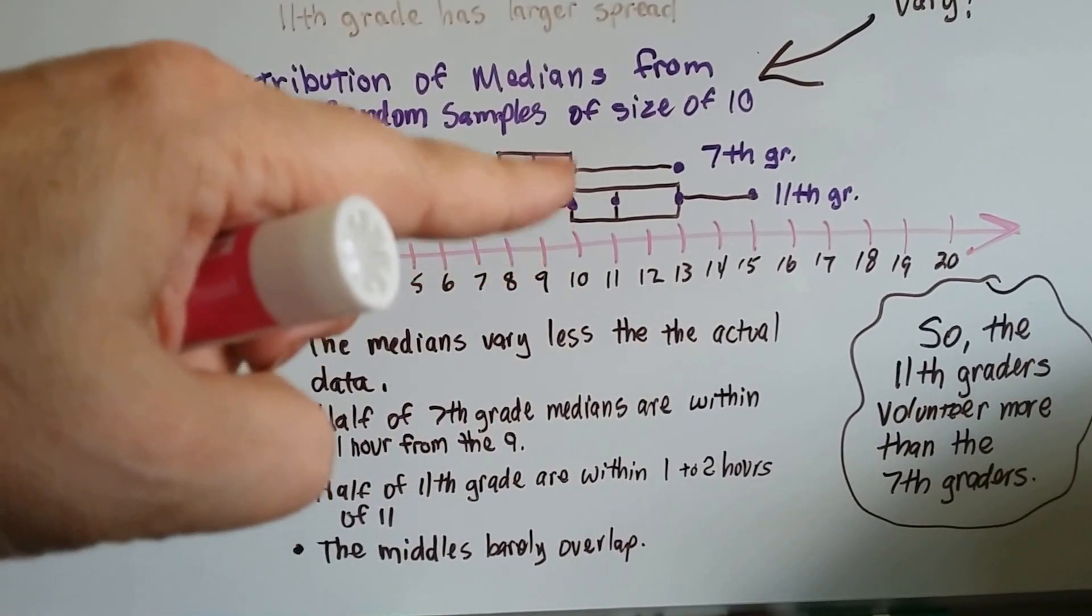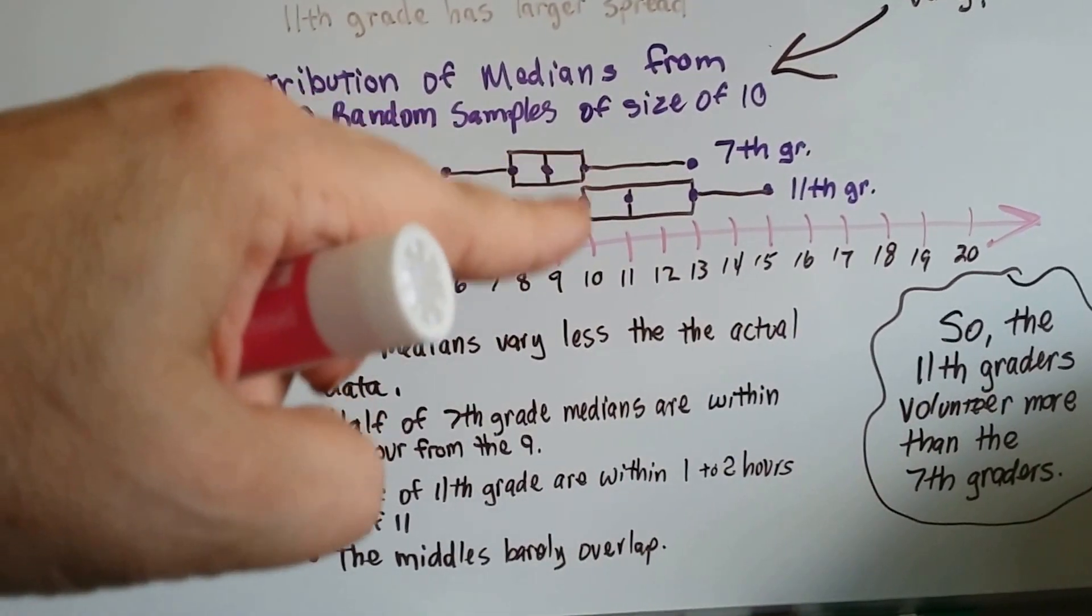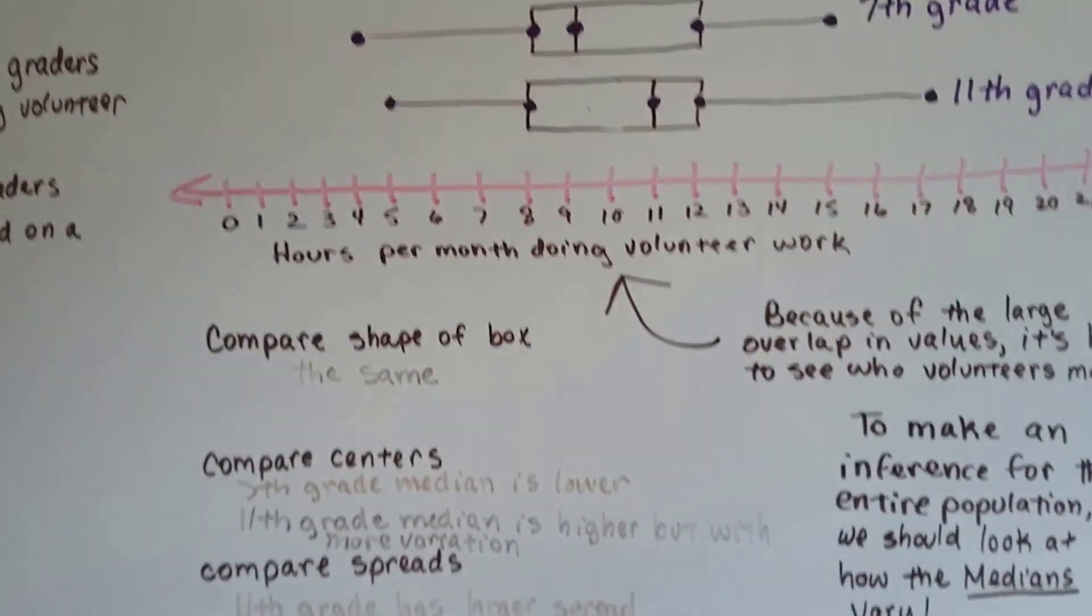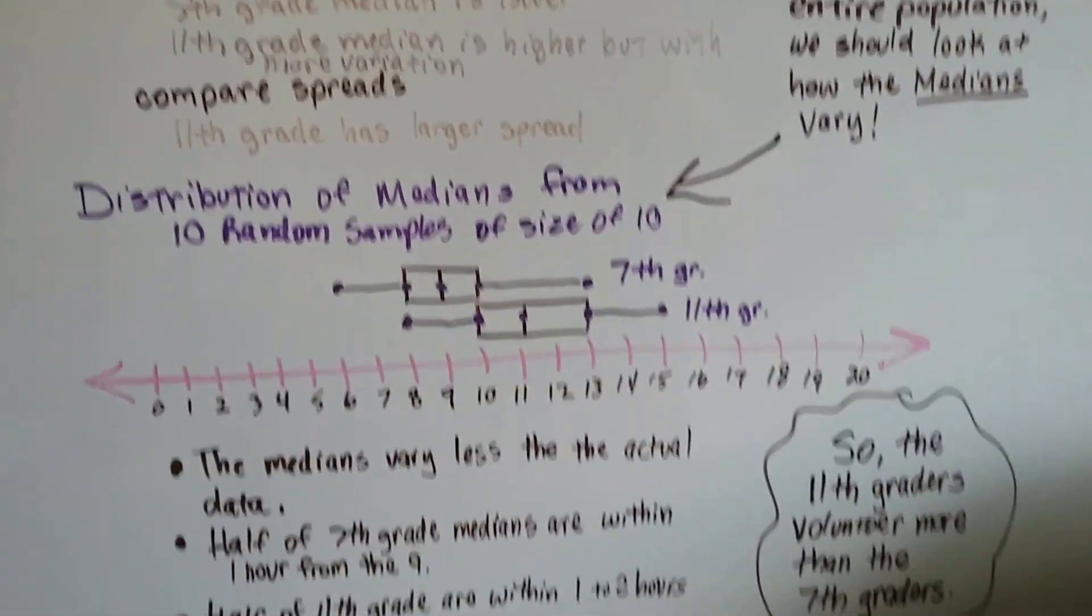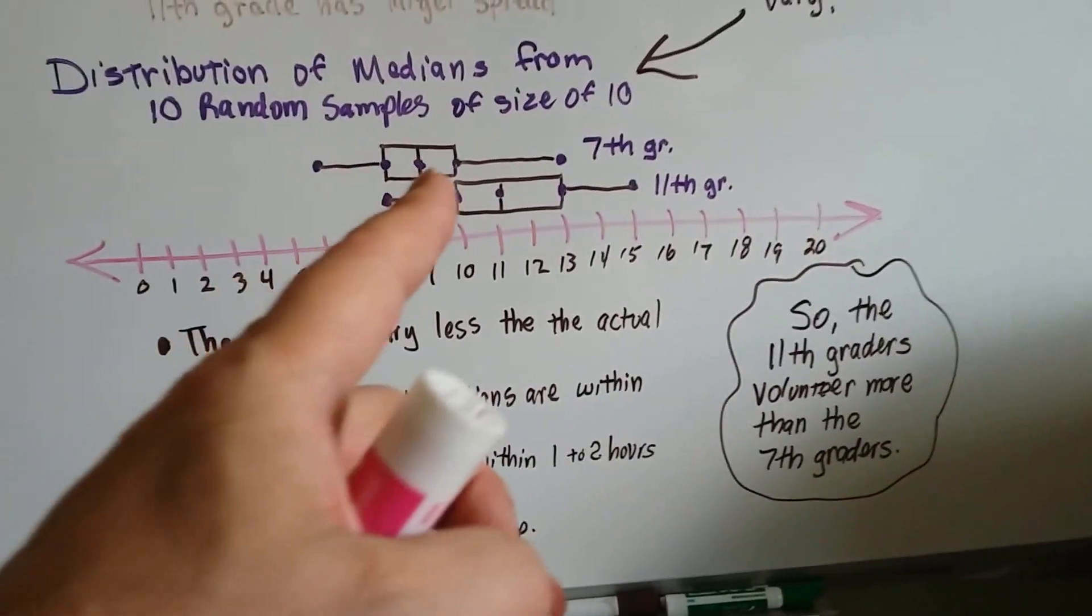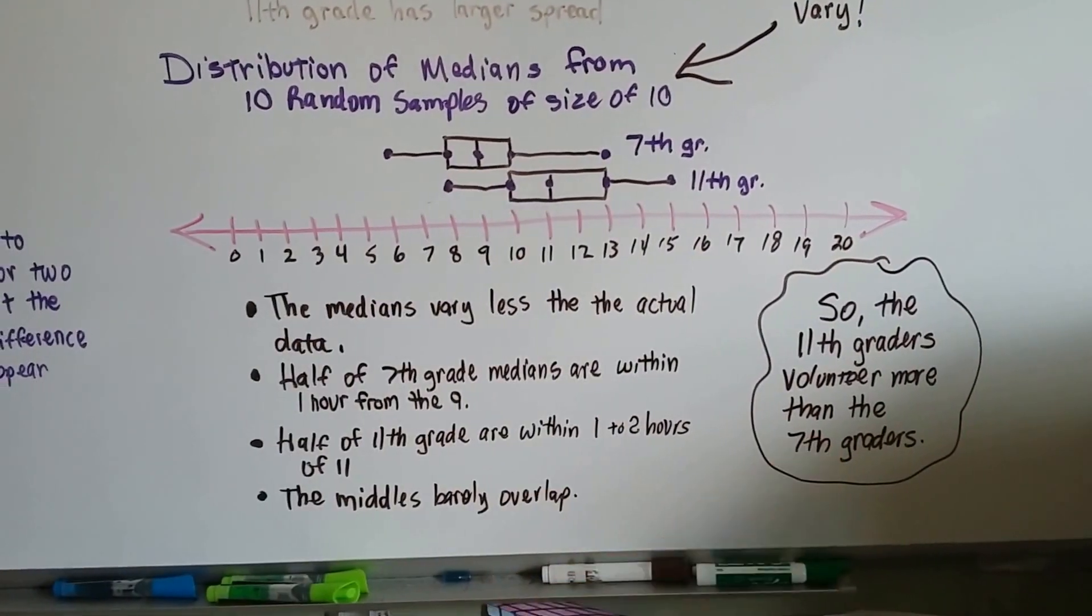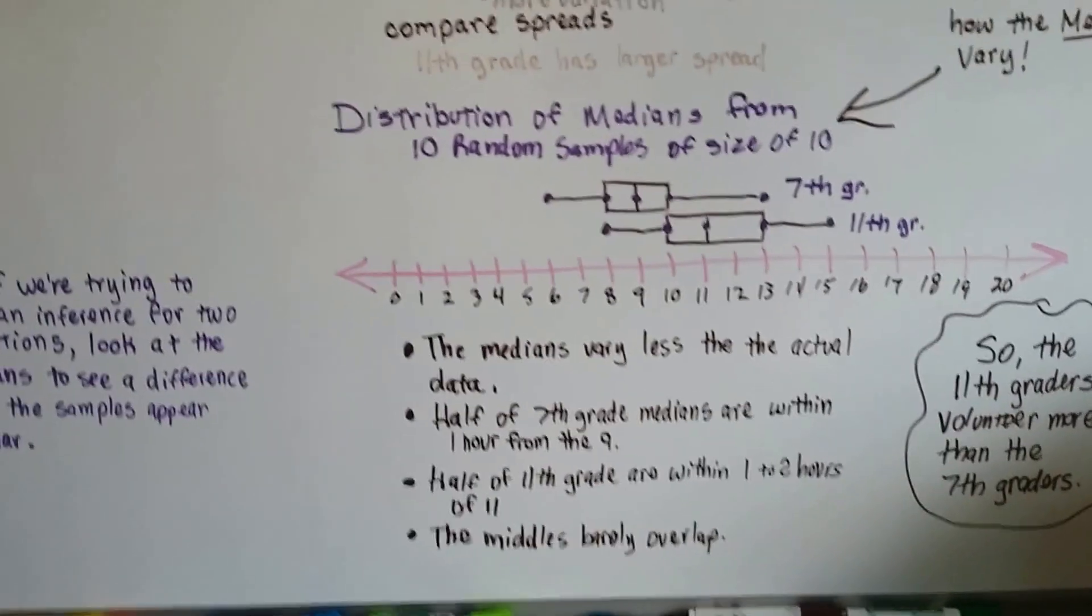Half the 7th grade medians are within the 9 and half of the 11th grades are within the 11. We can see that these middles barely overlap here. They're hardly touching each other. It's not like over here where both boxes were on top of each other. Here they're barely touching each other. So we can see from the distribution of the medians that the 11th graders volunteer more than the 7th graders.